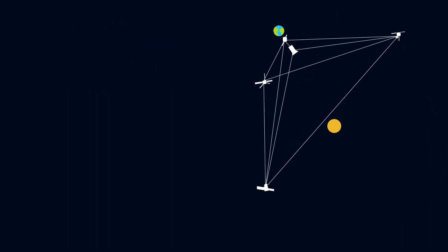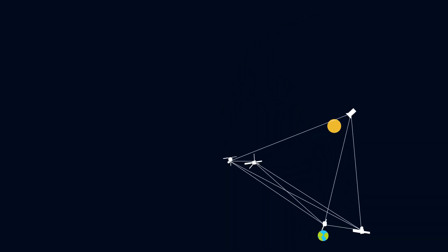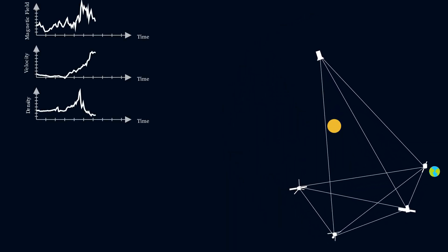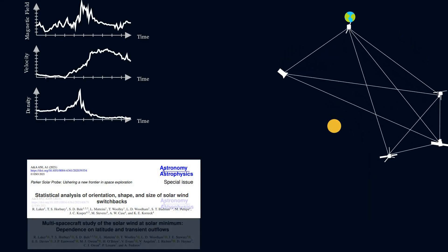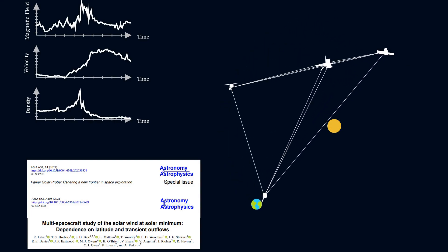All these spacecraft create a constellation, so we can measure many different points in the solar wind simultaneously. So in my PhD, I take wiggly data from all these spacecraft and turn it into knowledge about the solar wind. This can help forecast space weather events and prevent a blackout.